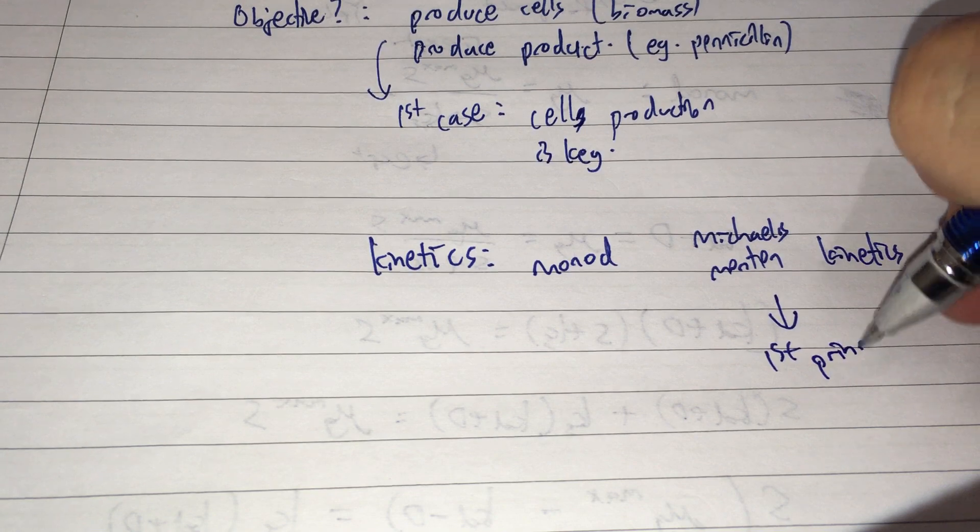We have this kinetic scheme which is called Monod, which is very similar to the Michaelis-Menten kinetics. The only difference is that Michaelis-Menten comes from first principle derivation. You have the rate and you have the substrate concentration S. You have some kind of curve with some maximum rate.